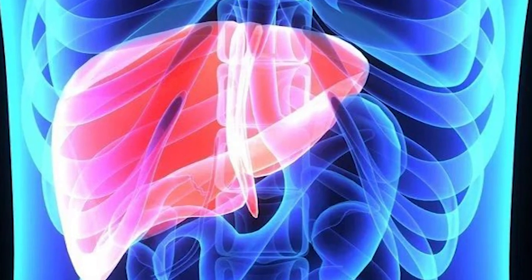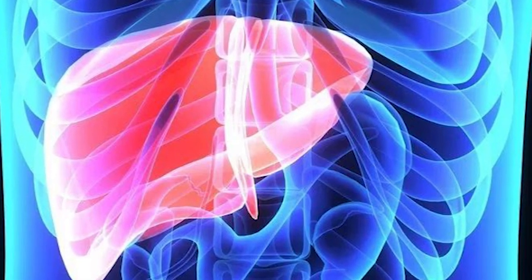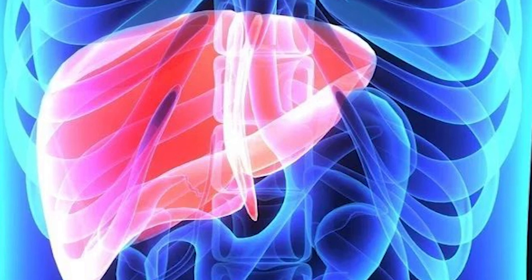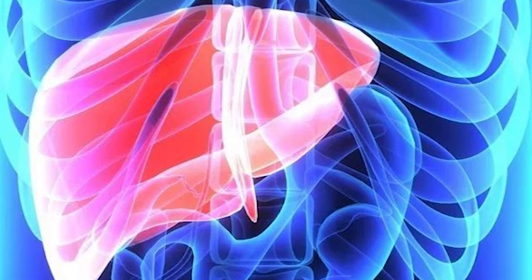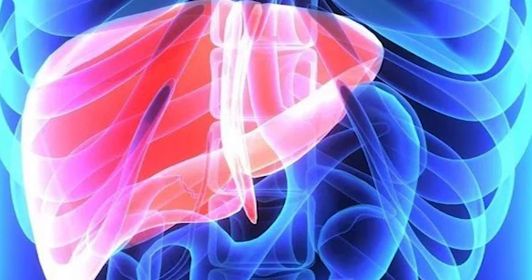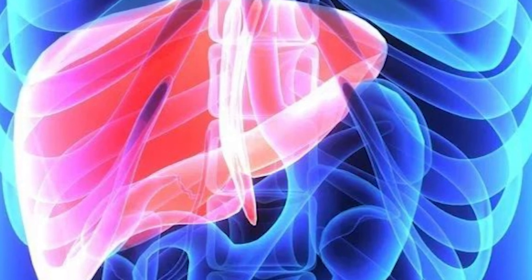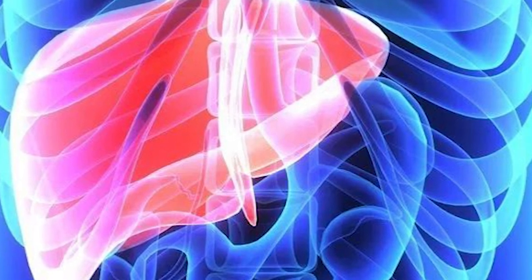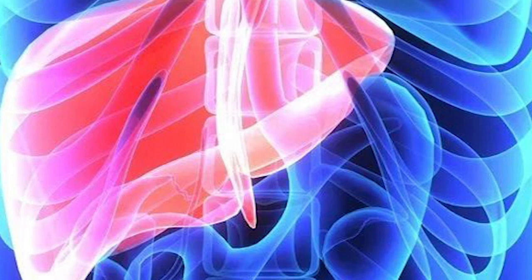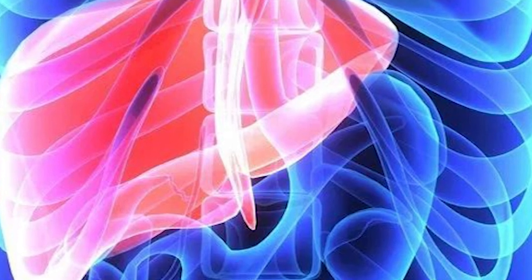Liver cirrhosis. Cirrhosis is the scarring of the liver tissue, often resulting from long-term liver damage due to chronic hepatitis, alcoholism, or other liver diseases. The scar tissue replaces healthy liver tissue, impairing liver function and causing pain.